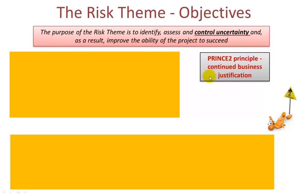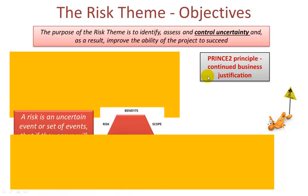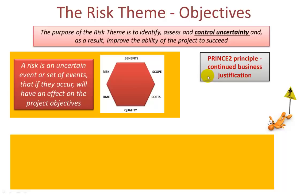There are seven PRINCE2 principles and the one which aligns itself with risk is the Continued Business Justification, since a risk to any of the project objectives may cause the business case and hence the project to no longer be viable. When we talk about the impact of risks, we're talking about the impact to one or more of these particular objectives. PRINCE2 defines a risk as an uncertain event or set of events that if they occur will have an effect on the project's objectives. A simpler way of describing risk is something which has yet to happen and may or may not happen at some point in the future; however, if it does happen, it will have an impact on one or more of the project objectives.